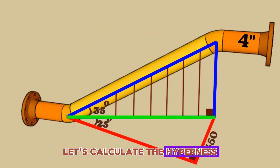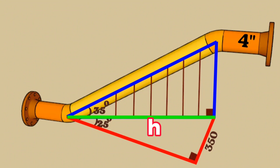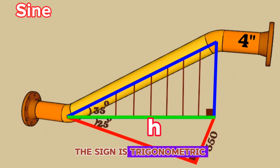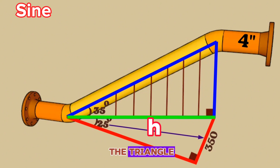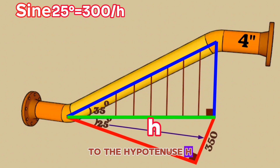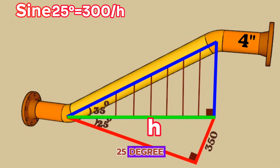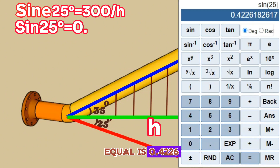Let's calculate the hypotenuse of the right triangle colored red, marking it with the letter small h. We can find the hypotenuse by using a trigonometric function. The sine is a trigonometric function of an angle — it is the ratio of the length of the side opposite that angle to the hypotenuse of the triangle. In other words, sine 25 degrees equals the ratio of 350 millimeters to the hypotenuse h. We will use a scientific calculator to find sine 25 degrees. Sin 25 degrees is approximately equal to 0.4226.